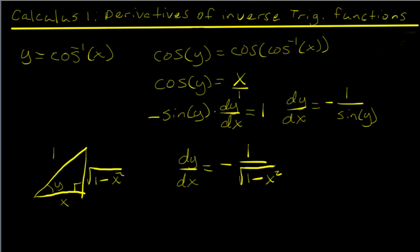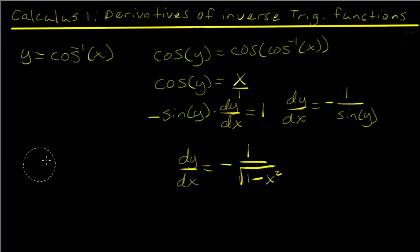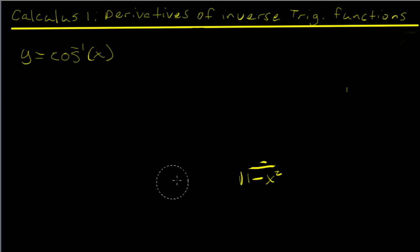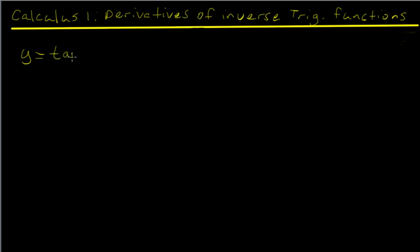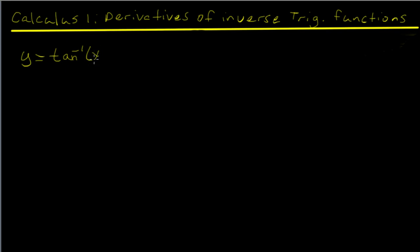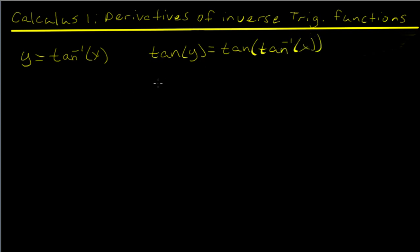Now we move to the tangent inverse. For y equals the tangent inverse of x, we take the tangent of both sides — tangent of y equals the tangent of the tangent inverse of x, which simplifies to x.